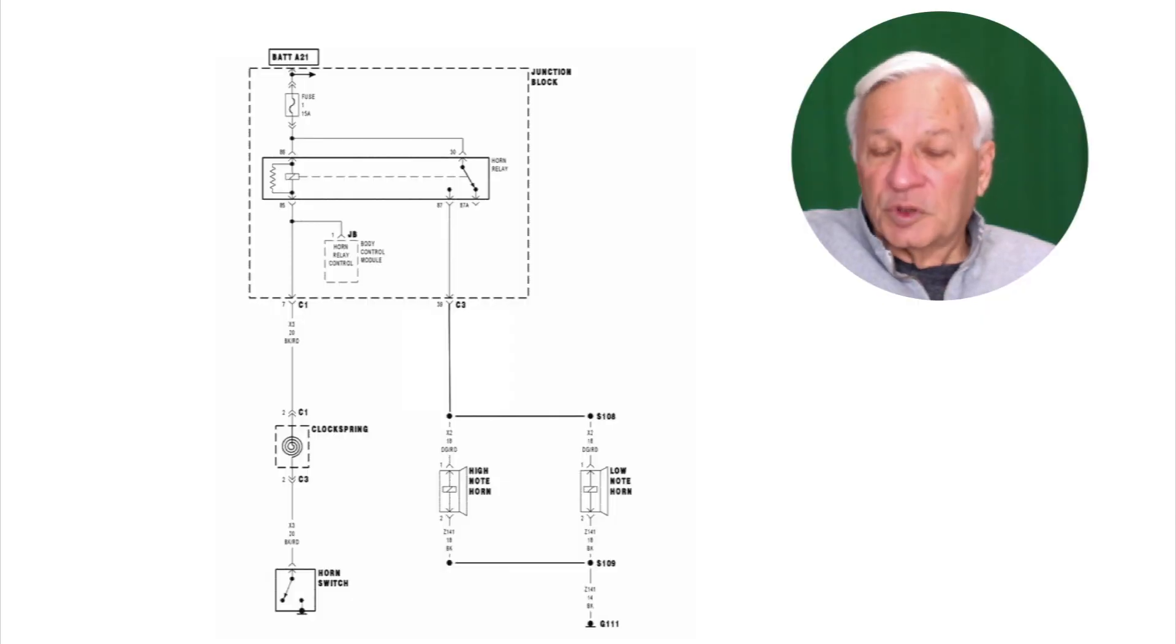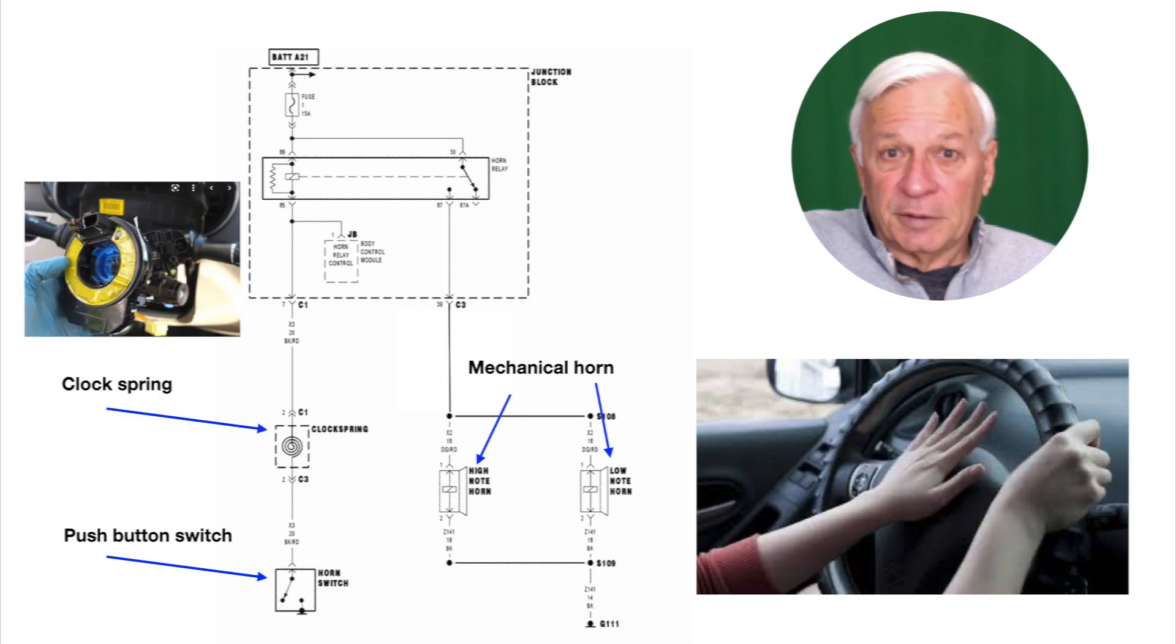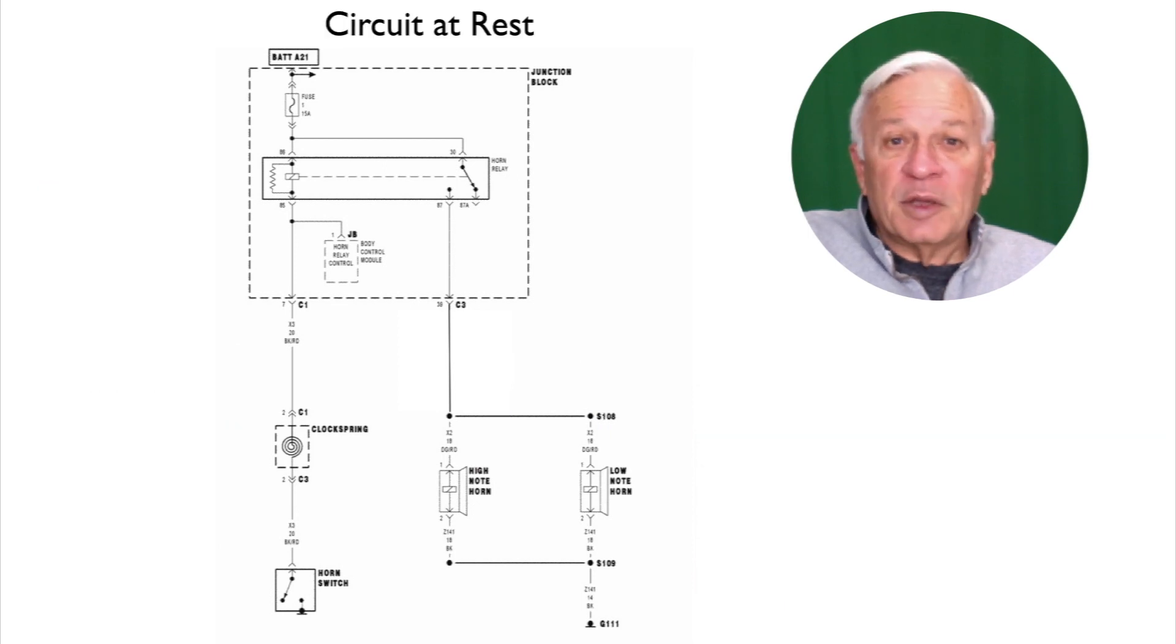Now let's get more specific. This is a basic horn diagram with two horns, a mechanical push-button switch, and a clock spring. Keep in mind all diagrams are drawn at rest, which means nothing is working.